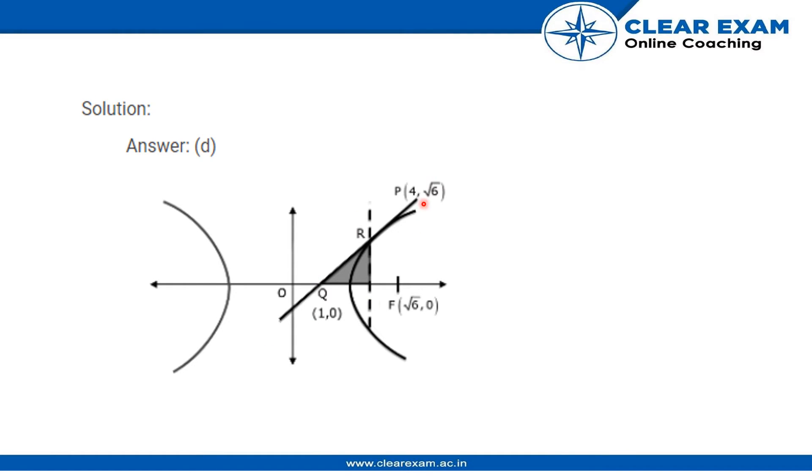So here is a diagram for this. We have a hyperbola, we have the tangent at P which meets the x-axis or major axis at Q and the latus rectum which passes through the focus at R. So we need the area of triangle Q, F, and R.